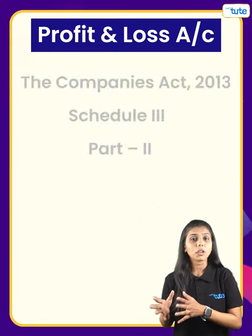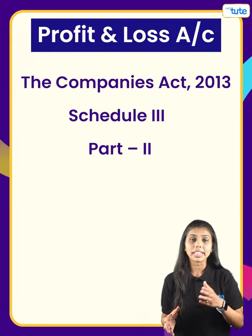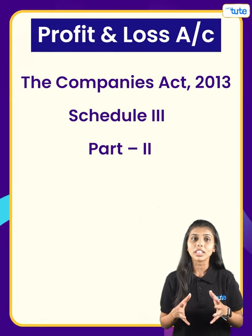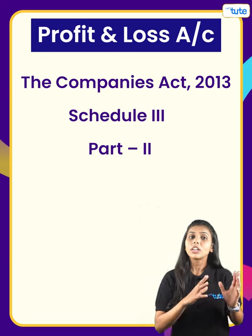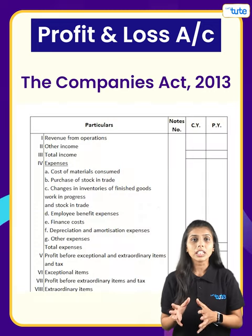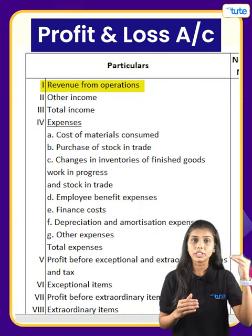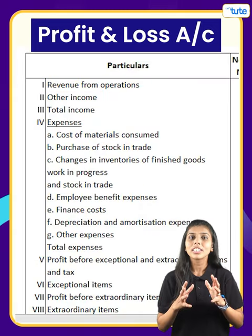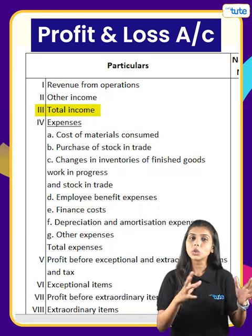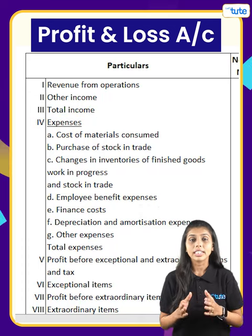Let's quickly see the format of the profit and loss statement as per Schedule 3 of the Companies Act 2013. First, income, which includes revenue from operations and other income — that gives us the total income.